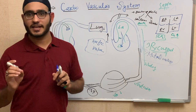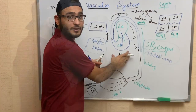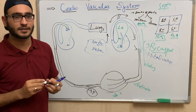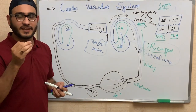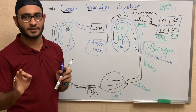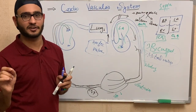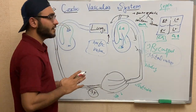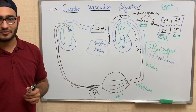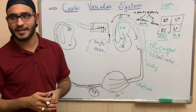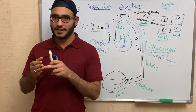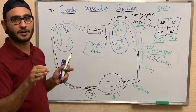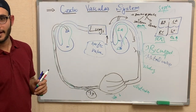The definition of an artery is a blood vessel that conveys blood away from the heart, except for the pulmonary and umbilical arteries. The definition of a vein is a blood vessel that supplies blood toward the heart, except for the pulmonary vein and umbilical vein.